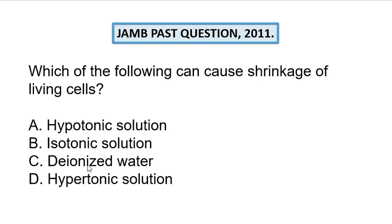Option C is deionized water. Because it is deionized, this option does not specify whether the water is hypotonic or hypertonic, so it's like normal water. There's not much to say about this with regards to the question.